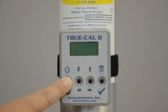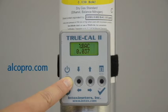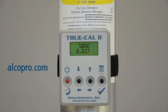You can also derive the expected value of the alcohol gas tank by using a TruCal device, which uses atmospheric pressure to predict the expected value of the gas. You can purchase a TruCal device at alcopro.com.